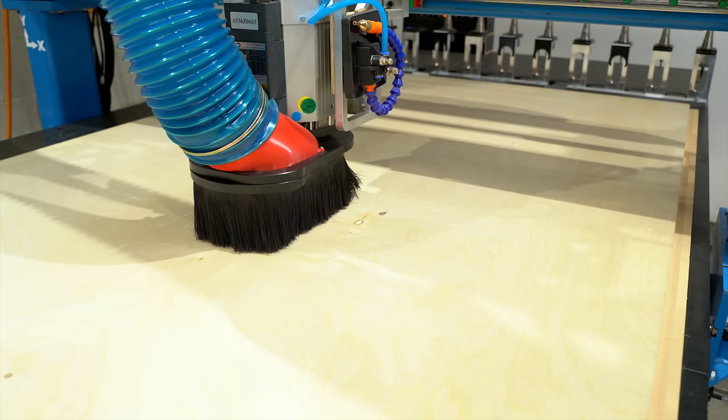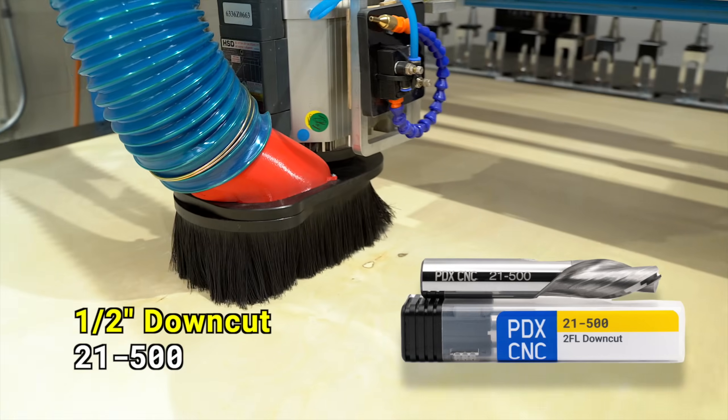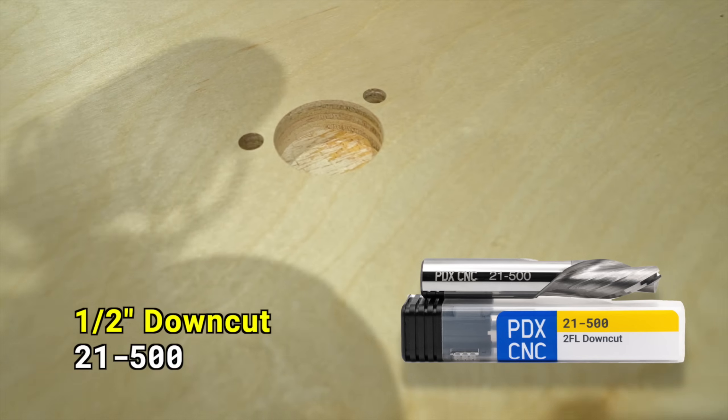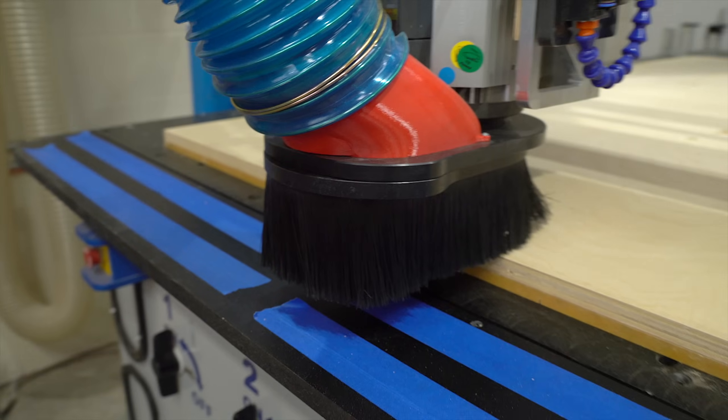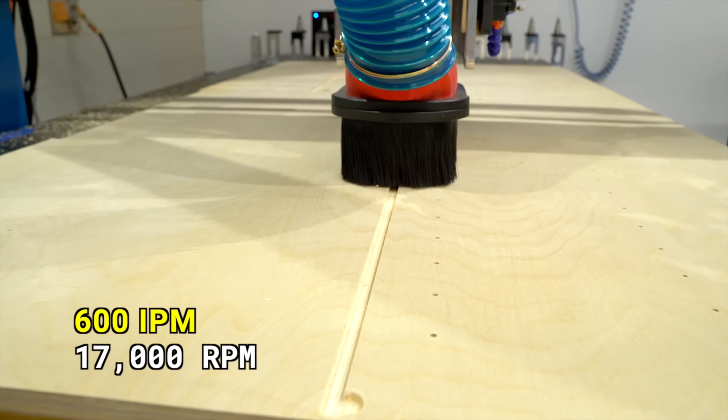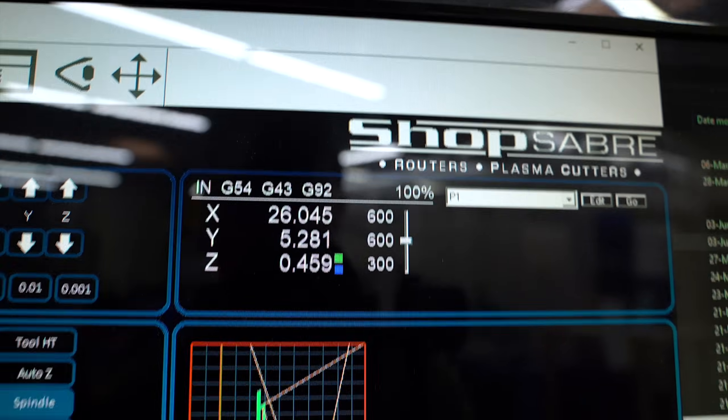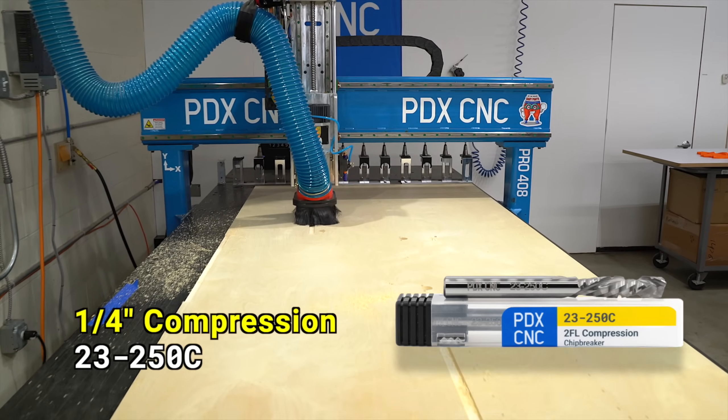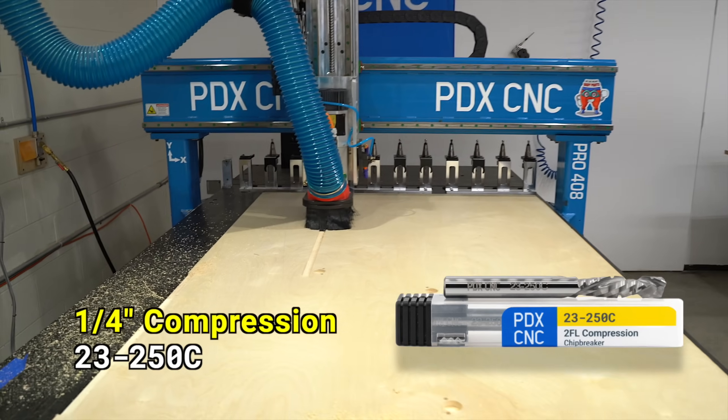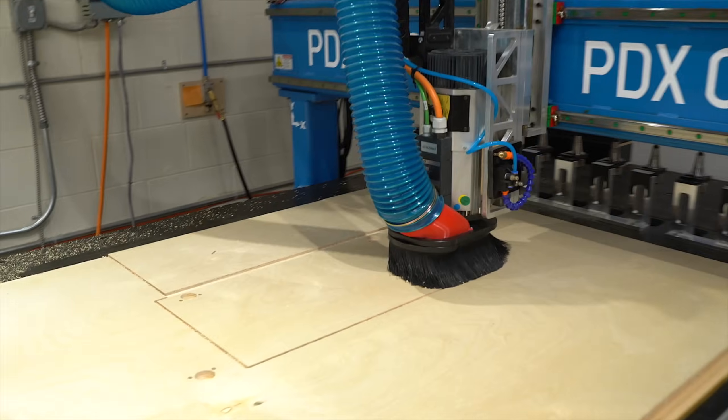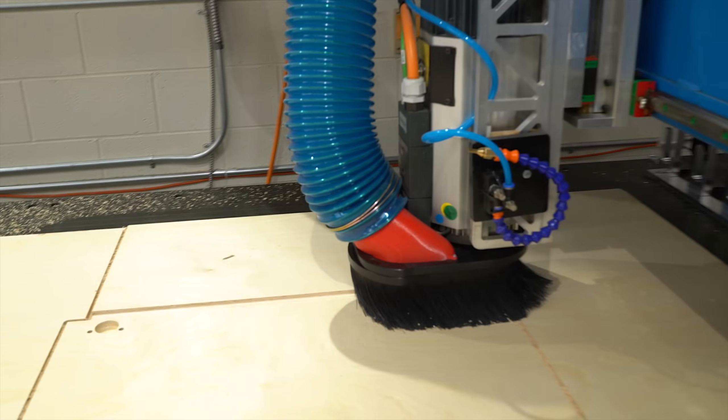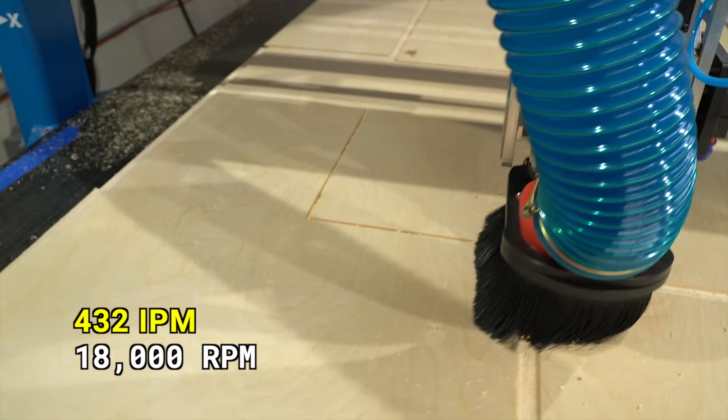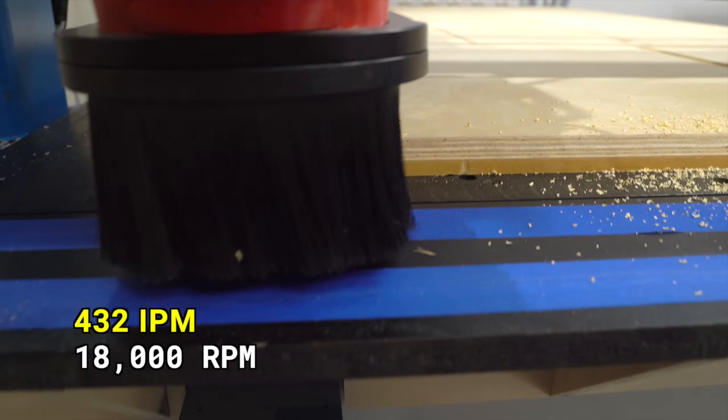Seconds later, we're on to our two flute down cutter, cutting the pockets for the hinges and the dados and the rabbits. This kind of tool can really move. We're going at 600 inches a minute and 17,000 RPMs. And finally, the quarter inch compression tool, cutting out the parts.